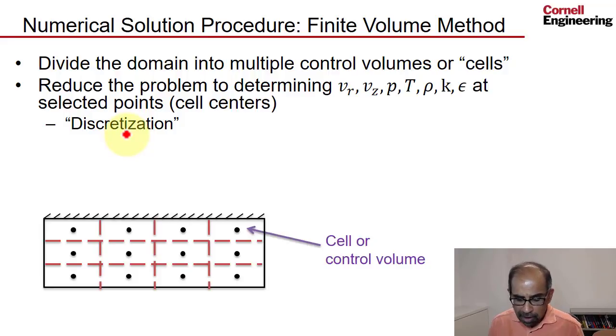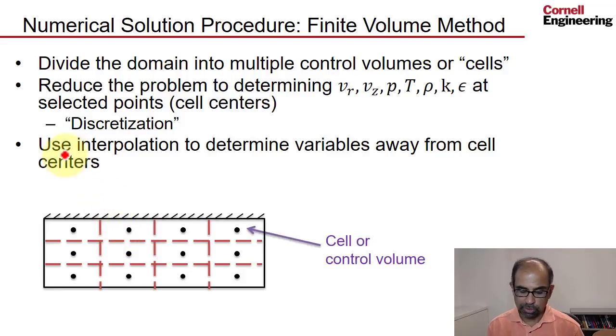And then what about if I want to find my variable, say, the axial velocity at an intermediate point? What you do is you would use interpolation, which seems quite obvious. So use interpolation to determine variables away from cell centers. If I want to know halfway between these two cell centers, what's the value? I would just use an average between these two values. If I want to know the value over here, you would use an interpolation between these four values as a weighted average. Two key ideas here, discretization and interpolation.